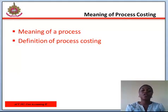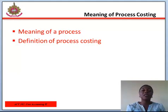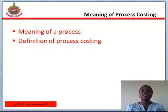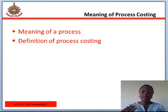Process Costing assigns average costs to each unit, and it is the opposite extreme of job costing, which attempts to measure individual costs of production of each unit. It is a method of assigning costs to units of production in companies producing large quantities of homogenous products. The Chartered Institute of Management Accountants, CIMA, defined Process Costing as the costing method applicable where goods or services result from a sequence of continuous or repetitive operations or processes, costed as an average over the units produced during the period.